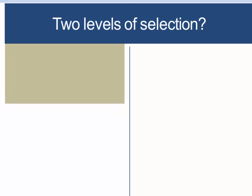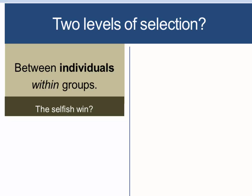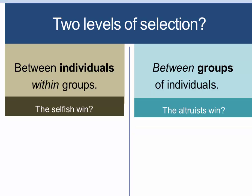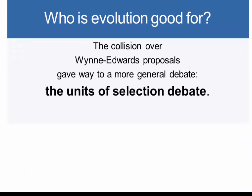It became conventional to talk about levels of selection. Two key levels are: selection between individuals within groups — where presumably the selfish win unless reciprocal altruism or inclusive fitness is at play — and selection between groups, where presumably the groups with the most altruists win. The issue became whether selection acts at both levels at once, or more strongly at one level than another. This came to be called the levels of selection debate, or the units of selection debate. The central question is: who is evolution good for — the group, the individual, or the gene? We're going to look at that debate next.